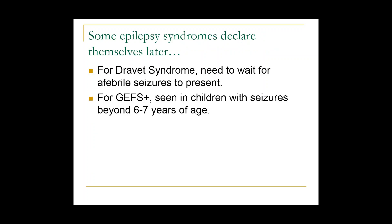What's challenging is that some epilepsy syndromes declare themselves later. Some patients have febrile seizures and we say most kids outgrow this, but then families return six months or several years later and the child has epilepsy — the febrile seizure was a precursor. For Dravet syndrome, we typically don't declare it until we start seeing afebrile seizures. For GEFS plus, we have to wait until the child is older than six years of age before we can make that diagnosis.